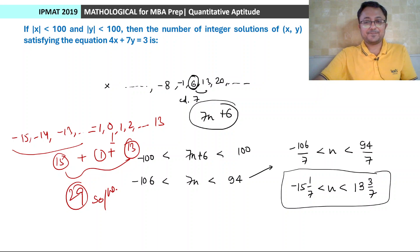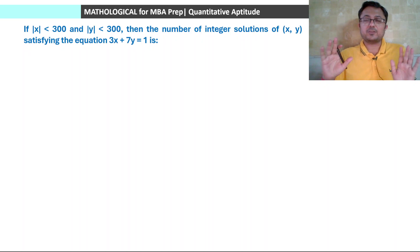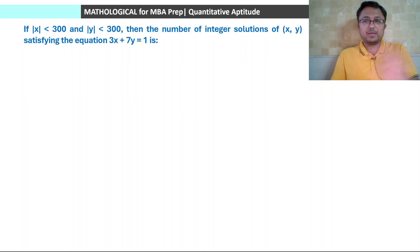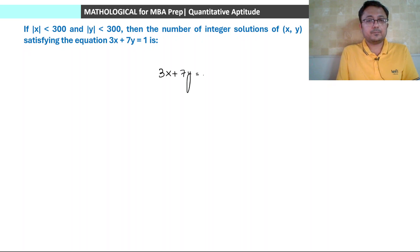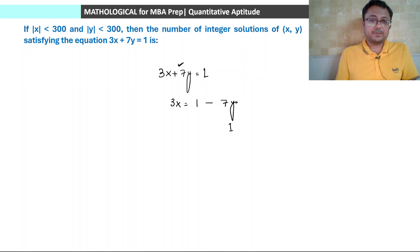Next question: if mod x is less than 300 and mod y is less than 300, find the number of integer solutions of 3x plus 7y equals 1. The process should be clear by now — pause the video, try solving it both ways yourself, then check. So 3x plus 7y equals 1, and since the coefficient of y is larger, we write 3x equals 1 minus 7y. At y equals 1 this gives 1 minus 7 equals minus 6, so x equals minus 2. First solution: x equals minus 2, y equals 1.